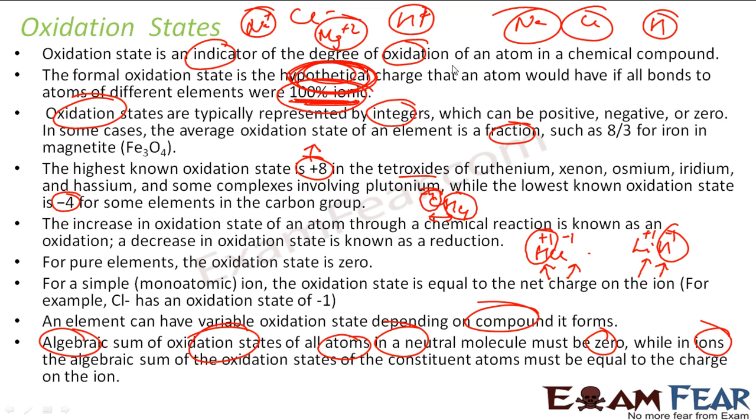Also, it is an indicator of degree of oxidation in an atom. If the oxidation number increases, we say it is oxidized. If the oxidation number is reduced for a given element in a compound, we say it is reduced.